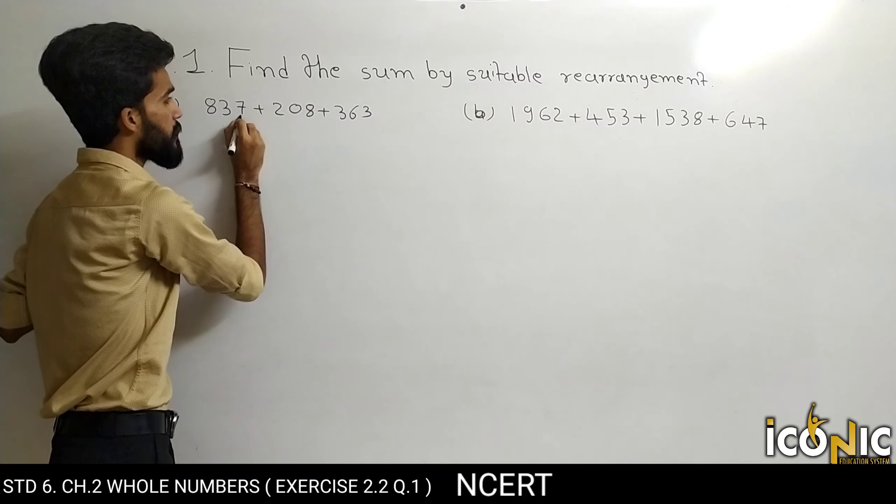Ab final addition karte hain: 0 plus 0 is 0, 0 plus 0 is 0, 1 plus 5 is 6, 1 plus 3 is 4. Toh iska answer aaya 4600. This is the solution of our question number 1. Now we will go on to our next example.